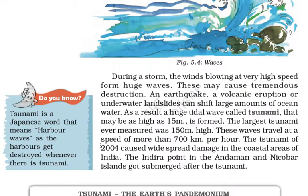Tsunamis occur in coastal areas where there are oceans. There cannot be a tsunami in Rajasthan because there is no ocean there. But near Maharashtra, Mumbai and Kerala, tsunamis can occur. The 2004 tsunami caused widespread damage in the coastal areas of India. The Indira Point at the Andaman and Nicobar Islands got submerged after that tsunami.